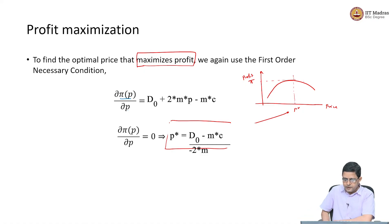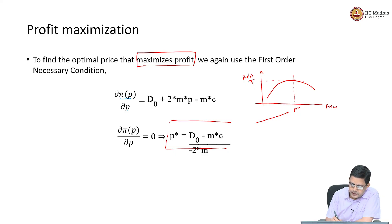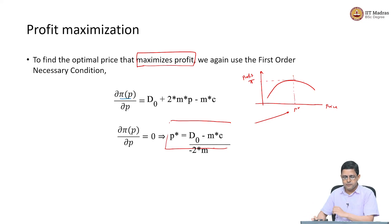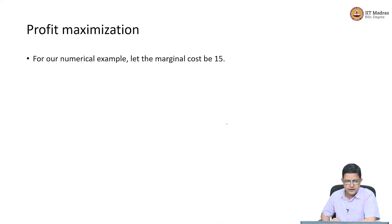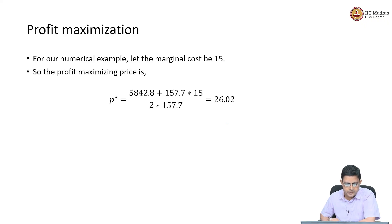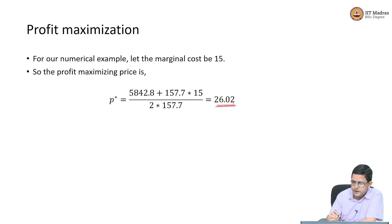For our numerical example, I already know D-naught, I know the market size, and I know the slope. Let us assume that the marginal cost is 15 — C equals 15. Then the optimal, profit-maximizing price turns out to be 26.02.